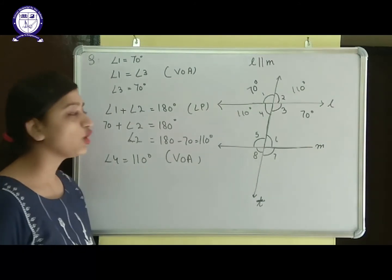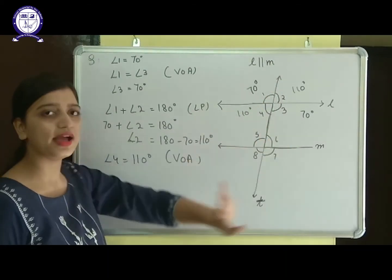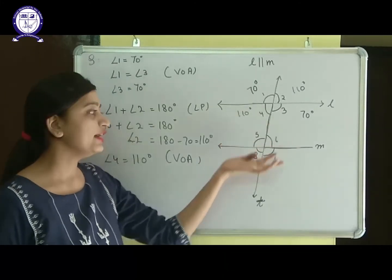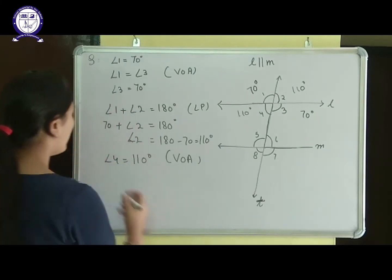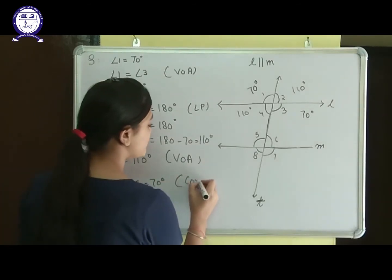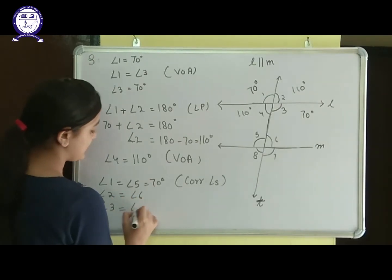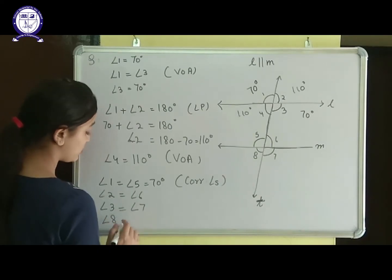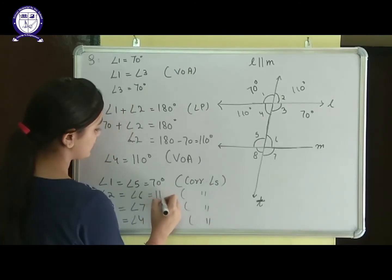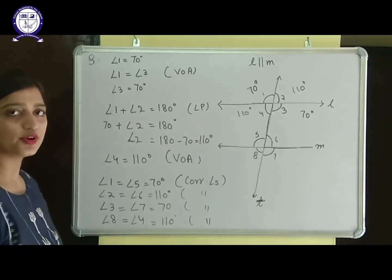Now that I have found all angles on one intersection, I can find the angles at the other intersection using parallel line properties. Angle 1 equals angle 5 equals 70 degrees — reason: corresponding angles. Similarly, angle 2 equals angle 6, angle 3 equals angle 7, and angle 8 equals angle 4 — all by corresponding angles. So angles 5 and 7 are 70 degrees, and angles 6 and 8 are 110 degrees.